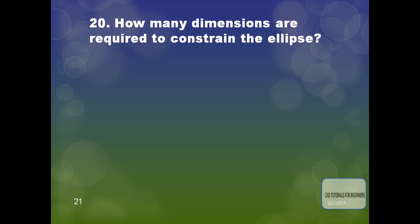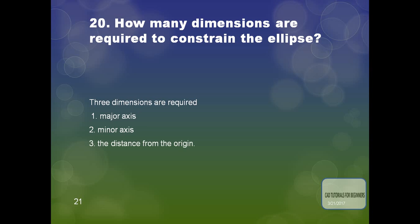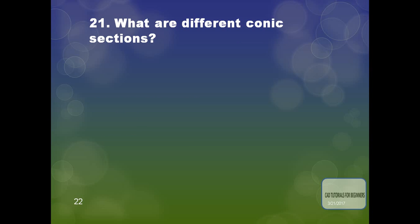The next question is: how many dimensions are required to constrain an ellipse? Three dimensions are required: first is the major axis, second is the minor axis, and third is the distance from the origin. The next question is: what are the different conic sections? The conic sections are ellipse, hyperbola, and parabola — three conic sections available in CATIA.